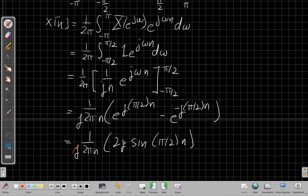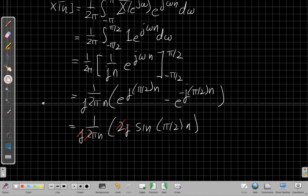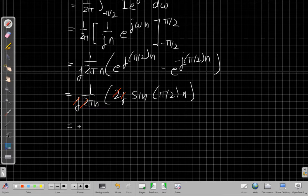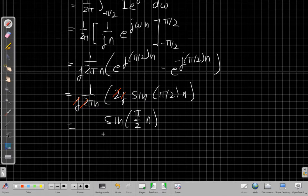I'm looking at this, I say, oh, and in fact, I can cancel the j's and I can cancel the 2's. And when I sort of simplify all that and get it together, I have 1 over pi n. I'll leave the sine in the numerator. I have sine of pi over 2 times n over pi n.